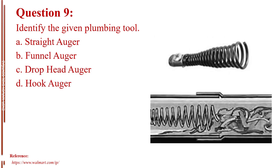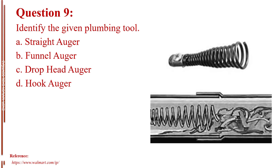Question number nine. Identify the given plumbing tool. Letter A, straight auger. Letter B, funnel auger. Letter C, drop head auger. Letter D, hook auger. The answer is Letter B, funnel auger.